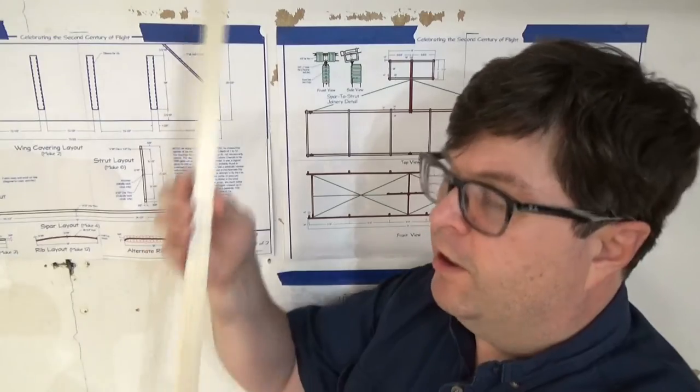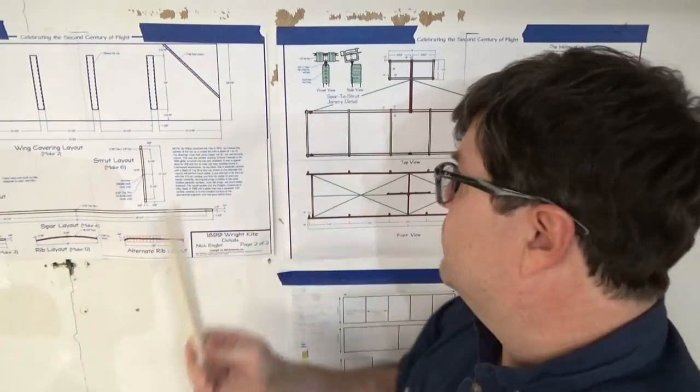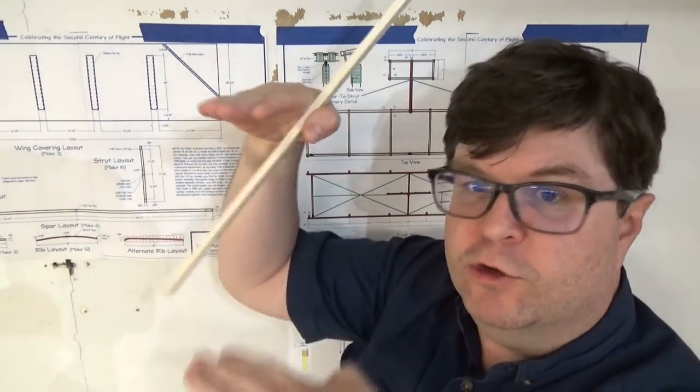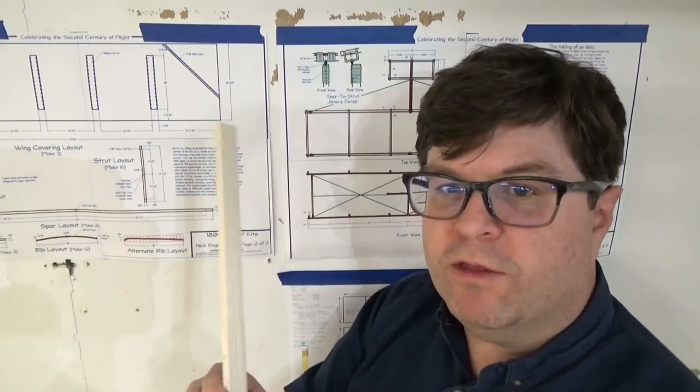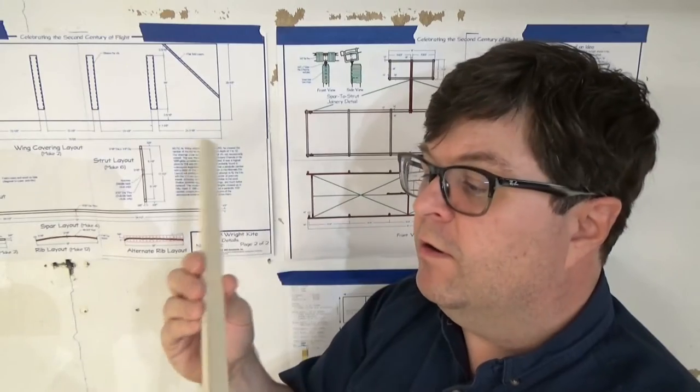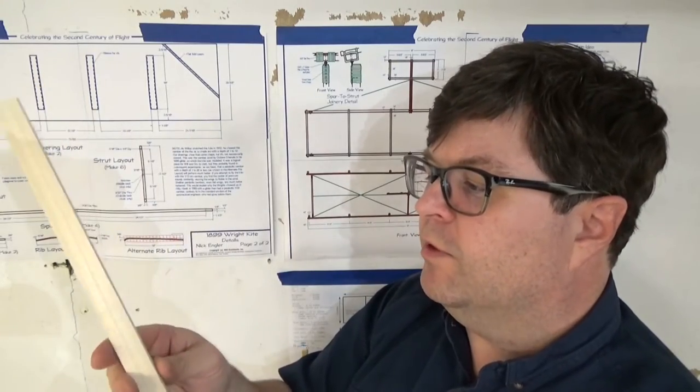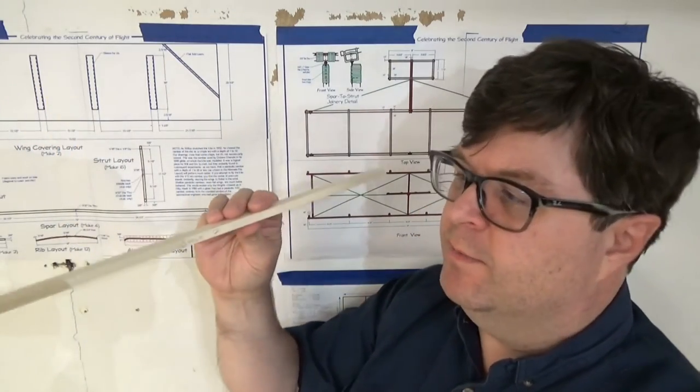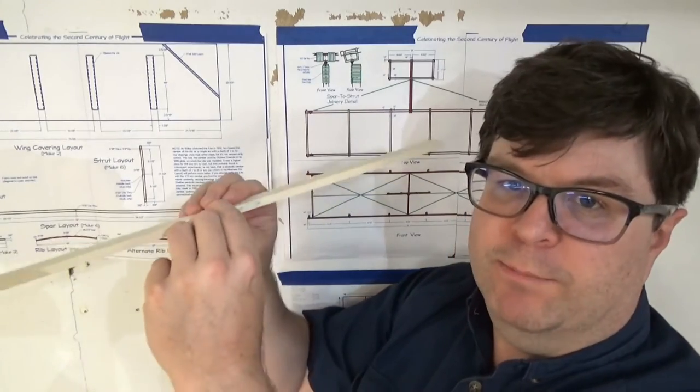Well, I've already run into my very first problem. This part is a strut. It's one of the vertical pieces that hold the two wings apart. Like all the other pieces, I first ripped these to rough thickness on the bandsaw. Then I ran them through the thickness planer a few times to get them to about eight millimeters thick.